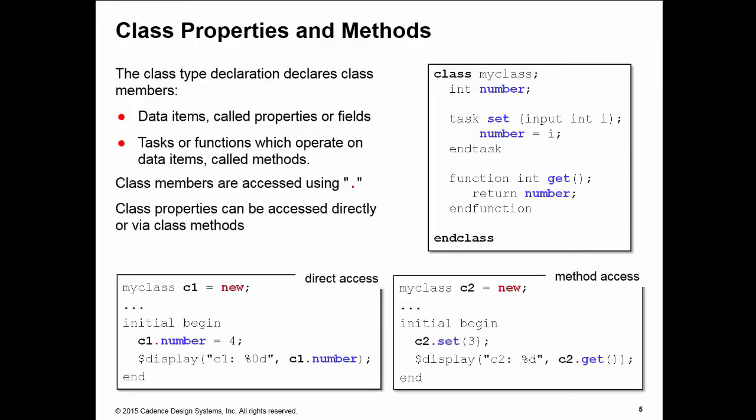You access the class methods from a class instance using the dot notation. In my direct access example I create an instance C1 of my class. I can then access the number property of C1 by using the dot notation C1.number, and I can read and write to that property.